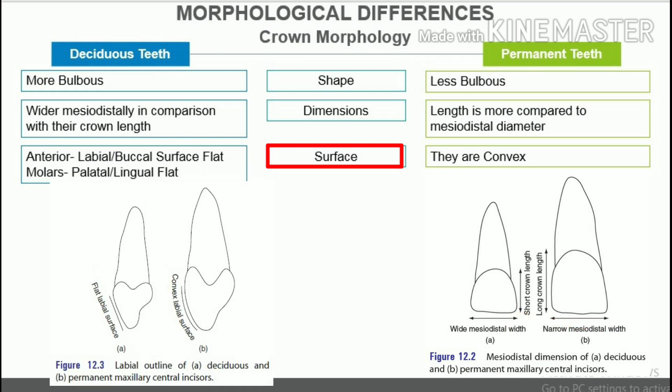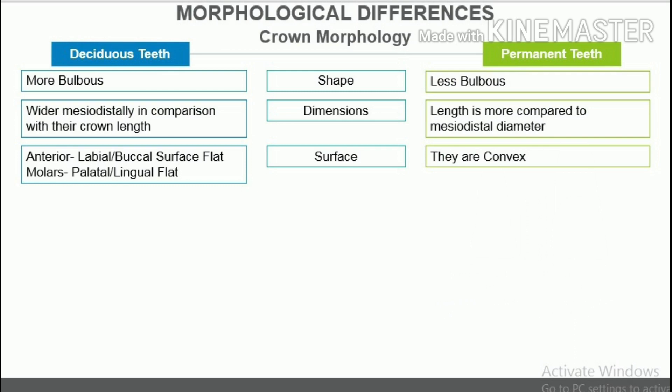Surface. In deciduous anterior teeth, the facial (labial and buccal) surface is flat above the cervical ridge up to the incisal surface. In deciduous molars, the lingual/palatal surfaces are also flat above the cervical ridge up to the occlusal surface. In permanent teeth, the facial and lingual/palatal surfaces are convex.